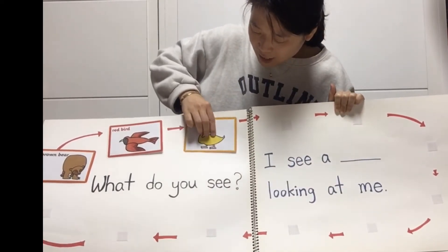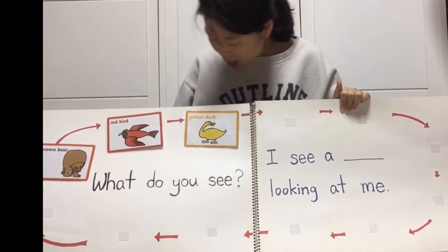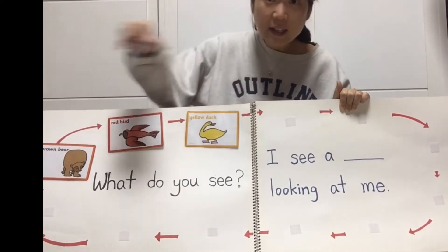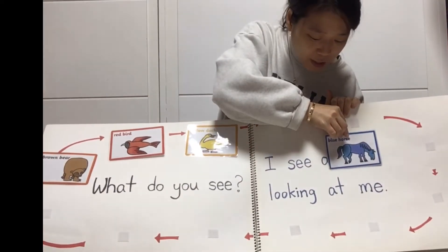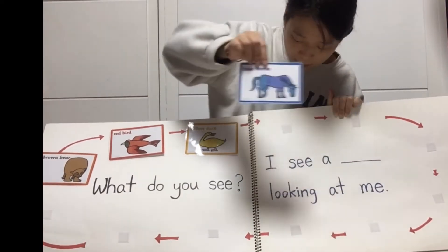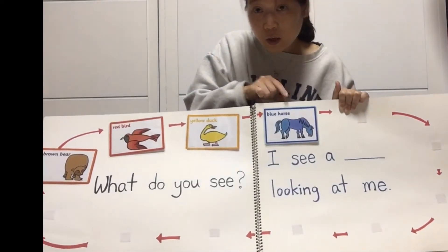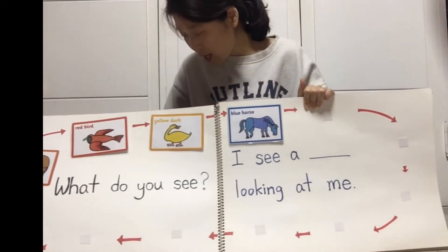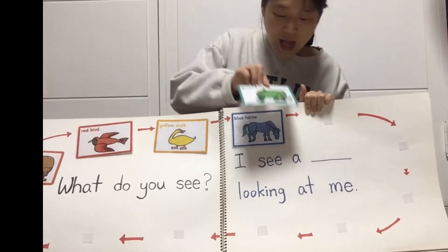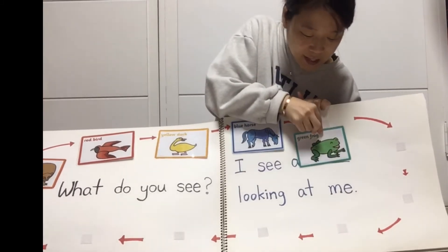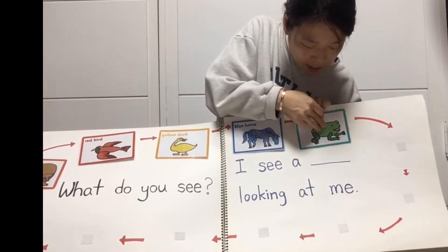Yellow duck, yellow duck, what do you see? I see a blue horse looking at me. Blue horse, blue horse, what do you see?